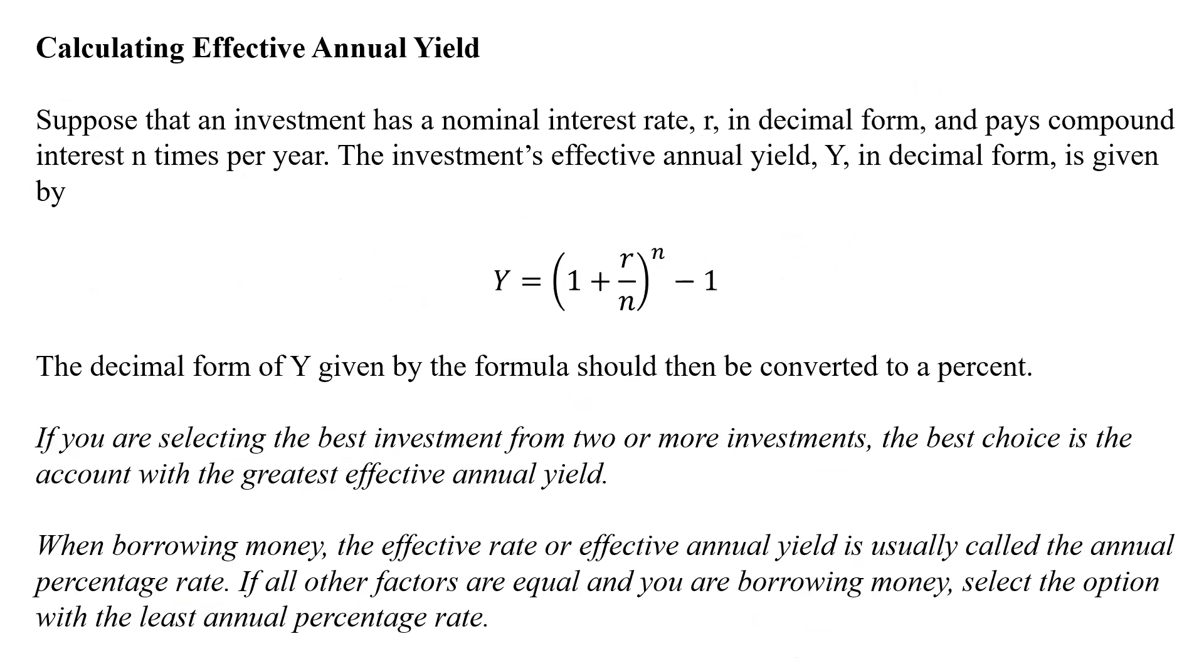Now, what if we want to calculate the effective annual yield? Suppose your investment has a nominal interest rate r in decimal form. You have to always use decimal forms. And pays compound interest n times per year. The investment's effective annual yield Y in decimal form is given by the following equation: Y equals 1 plus r over n to the power n minus 1. The decimal form of Y given by the formula should be converted to a percent. If you're selecting the best investment from two or more investments, the best choice is the one with the greatest effective annual yield.